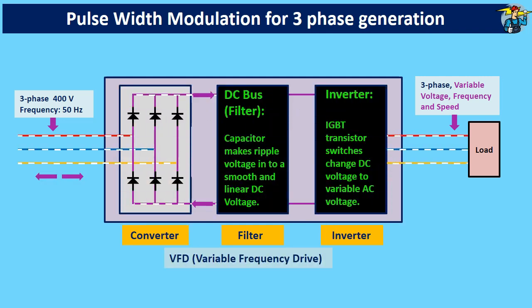IGBT switches in the inverter transform this DC voltage into AC voltage, but with a variable frequency, allowing smooth control of the motor speed.